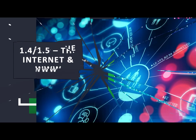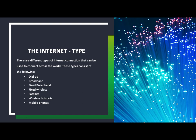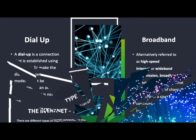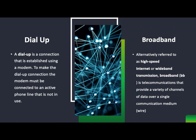Moving on to the internet and World Wide Web, there are different types of internet access through different connections. Dial-up was used years ago — it essentially rang the internet and would take about 50 seconds to connect. If someone was using the internet at home the phone line would go down, as it used the same phone call line. Broadband came after dial-up because people were frustrated that they couldn't use the phone and internet at the same time.